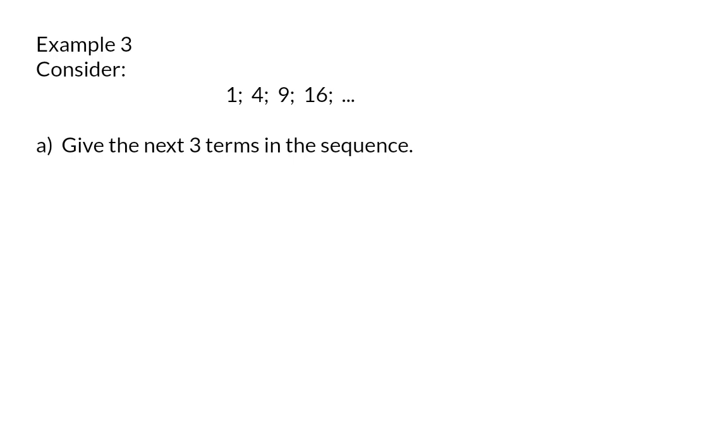Example 3. Consider the sequence and give the next three terms in the sequence. In the given sequence there is no constant difference or constant ratio between consecutive terms. Then your next option is to see whether you can find a relationship between the position and the value of each term.